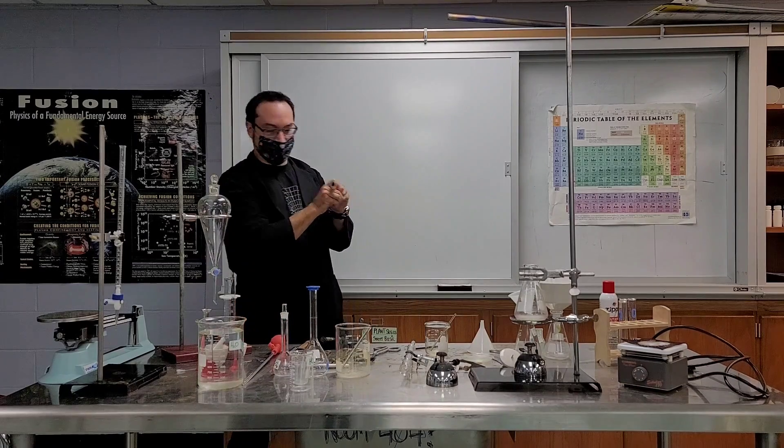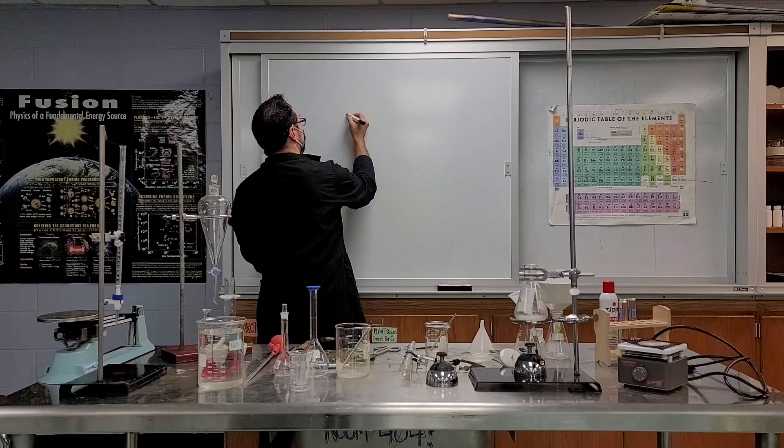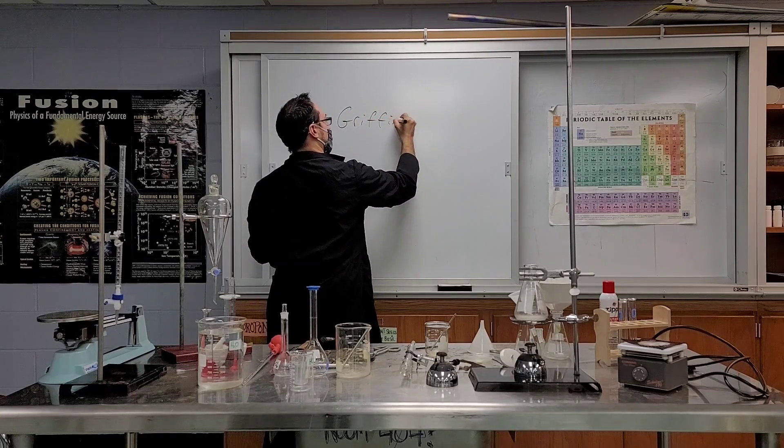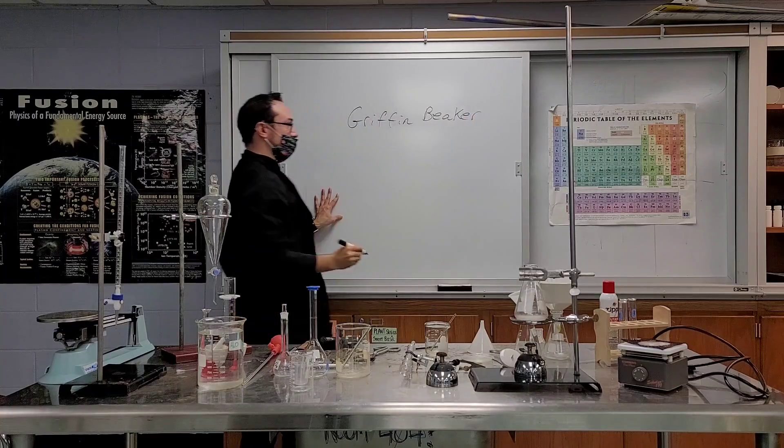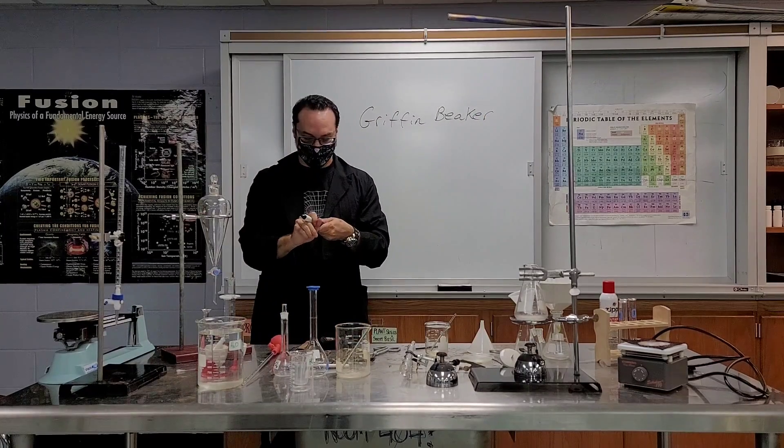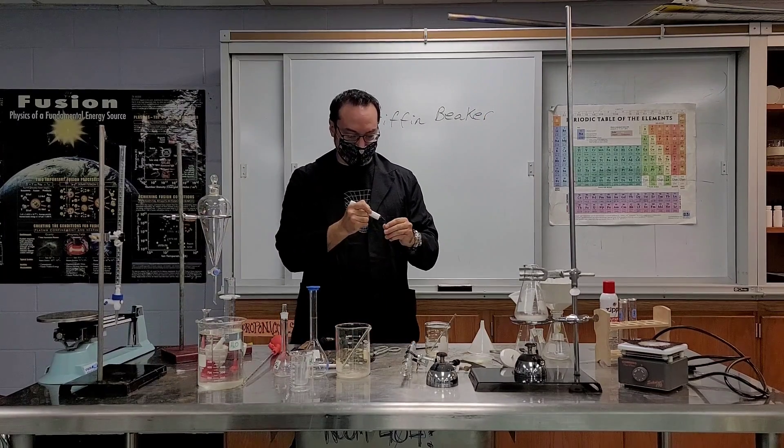I will put the name of the piece of equipment up here as I go along and just listen carefully to me about how I describe how the equipment is mostly used. Okay, so the first piece of equipment is called a Griffin beaker. Okay, you see them all the time. They kind of look like a cup.